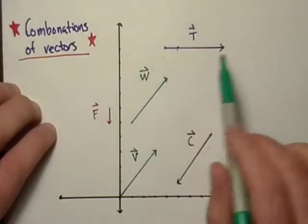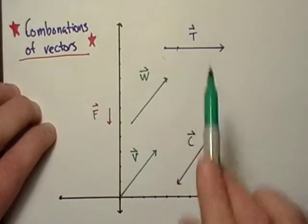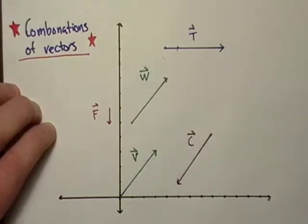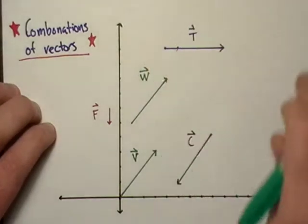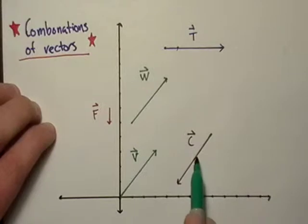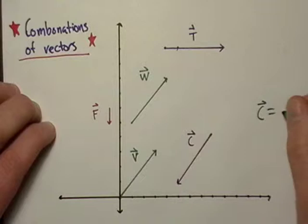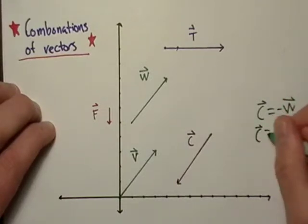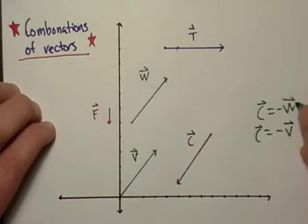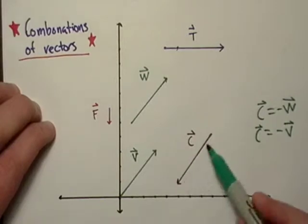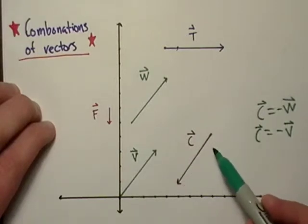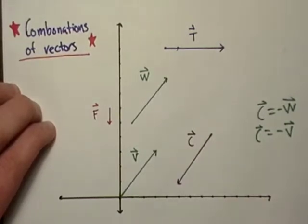Now look at vector T up here - it's straight, horizontal. Vector C is actually equal to negative vector W and C is also equal to negative vector V. This one has the same magnitude, it just has exactly the opposite direction.